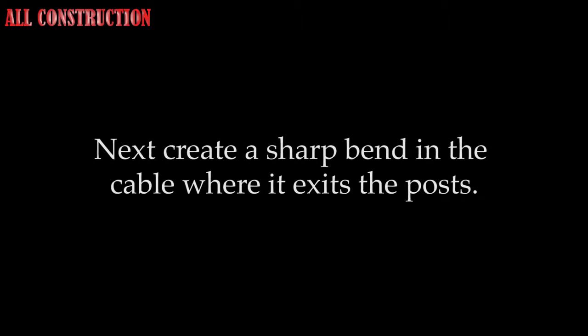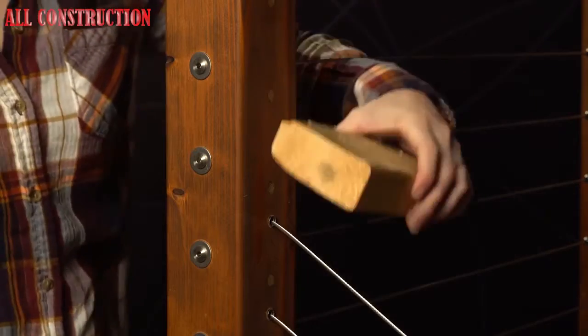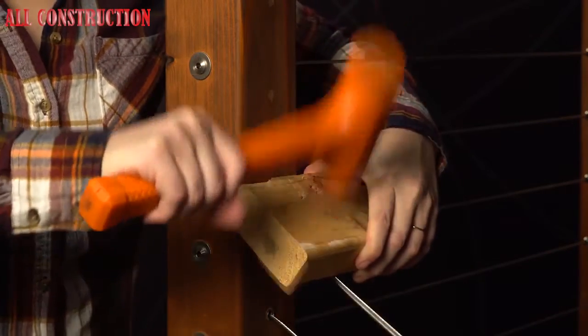At both ends of the run, you're going to create a sharp bend in the cable where it exits the post protector tube in the wood post by placing a block of wood for protection of the post on the cable next to the post tube at the face of each post and striking it with a hammer.